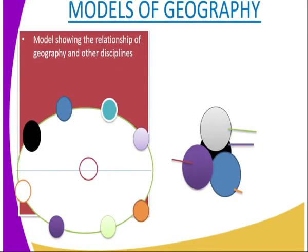Now let us look at how geography is centrally located. From the models shown, you can see from the diagram that all those circles are related — they are subjects, the physical side, related to geography which is at the center. In our circled image, geography is shown in the black part, with the other three — health science, social science, and geometrical science — surrounding it.